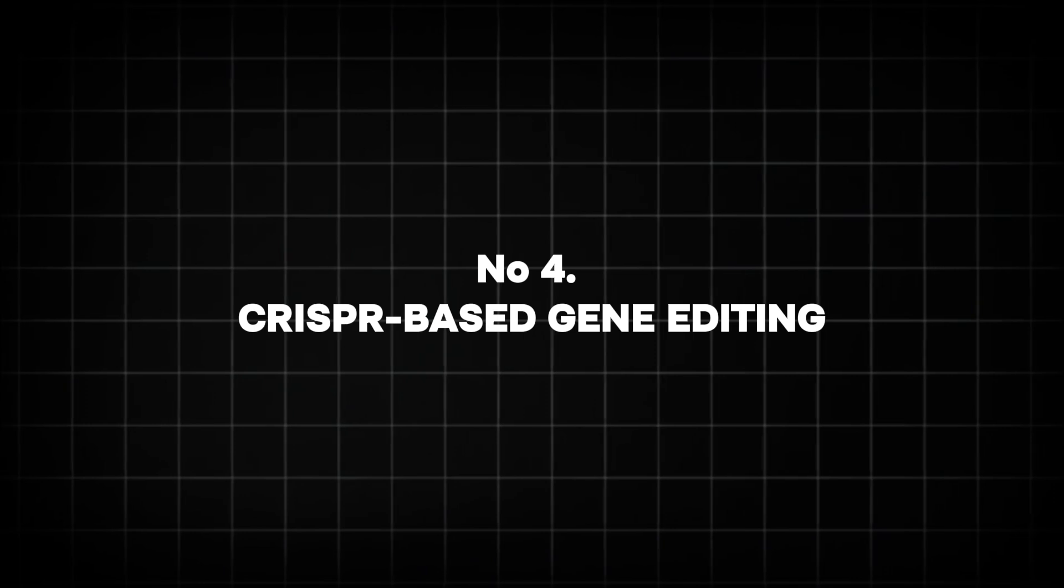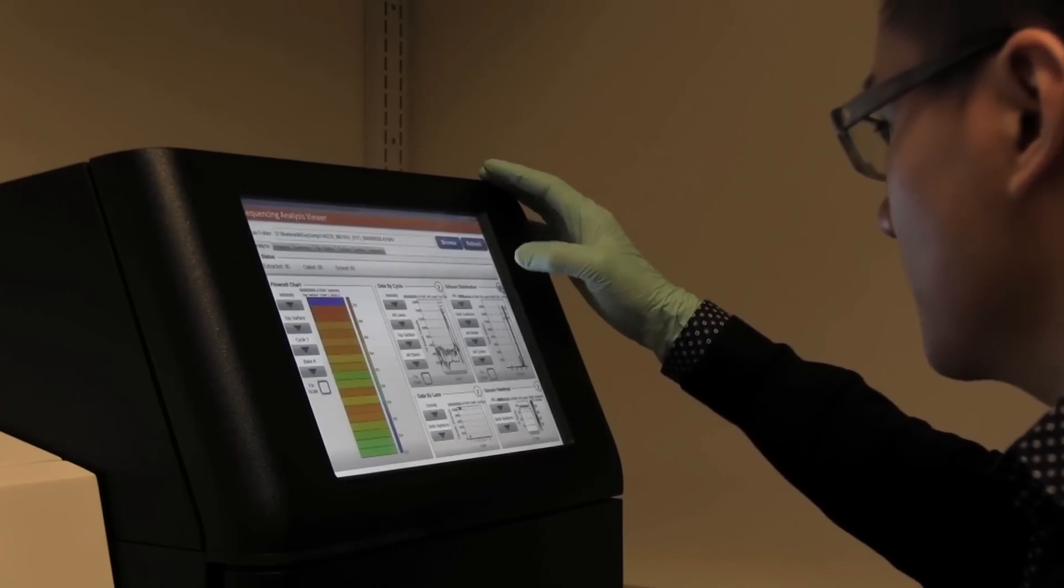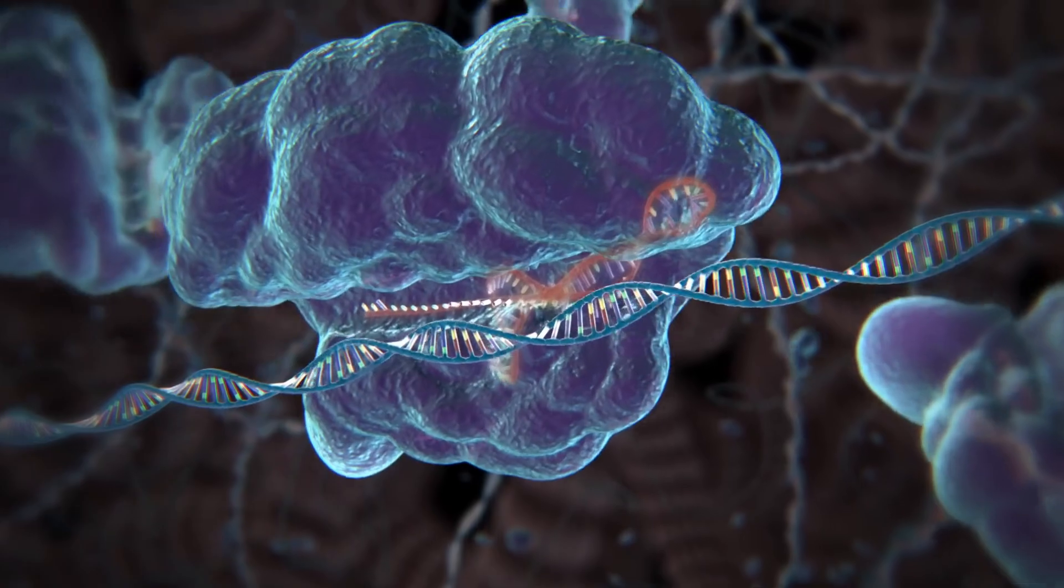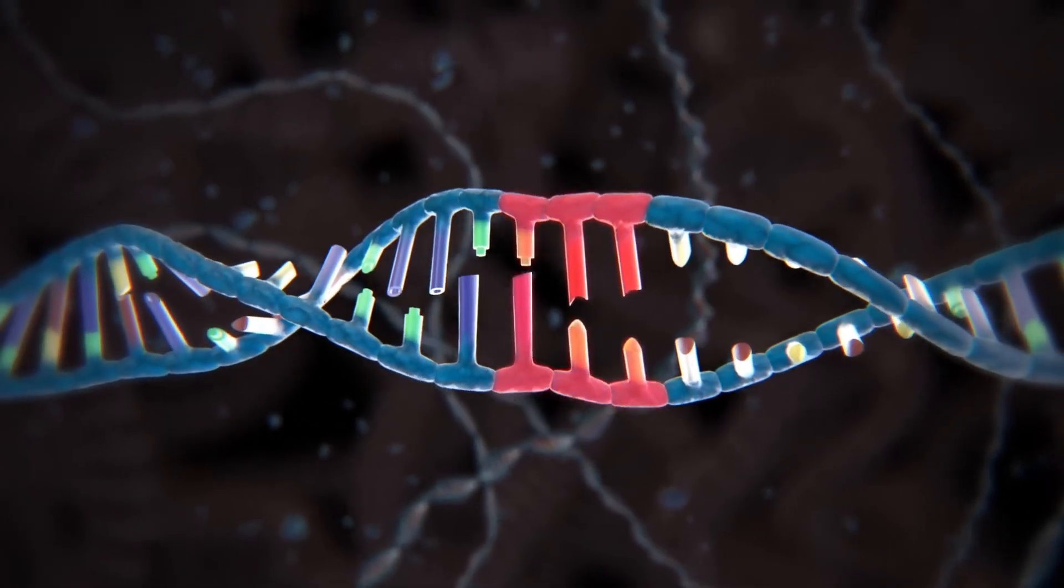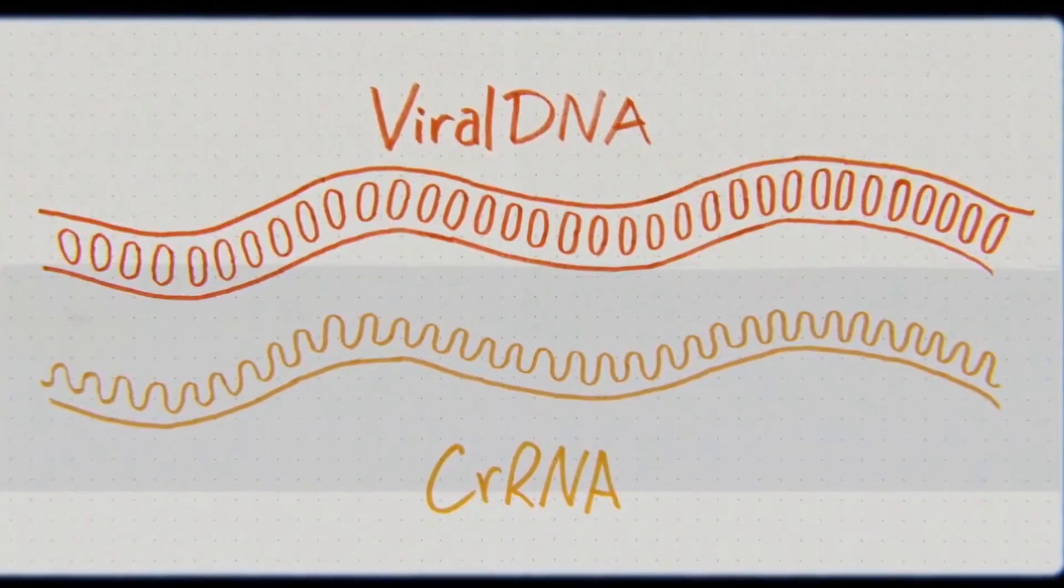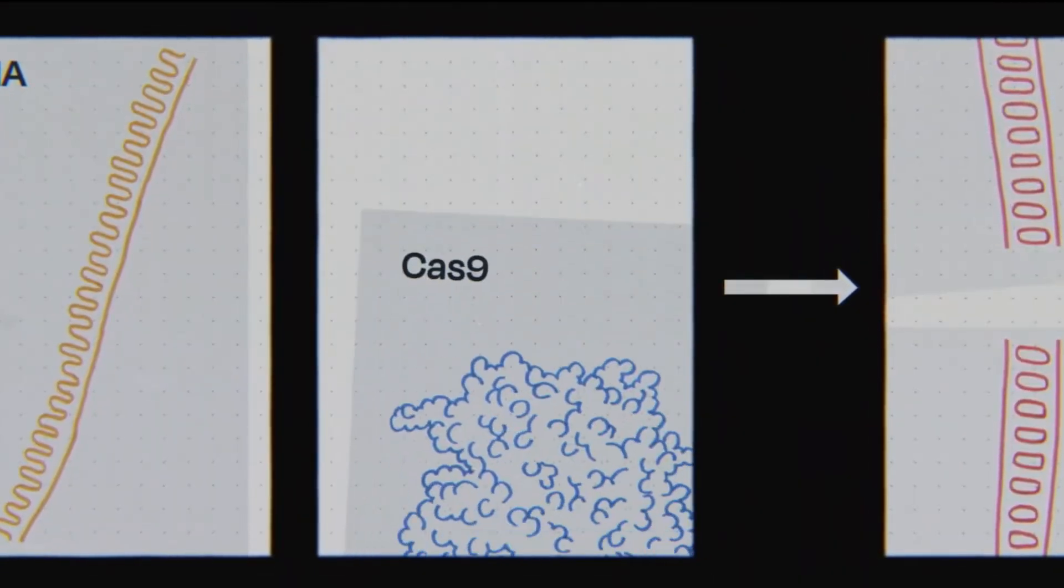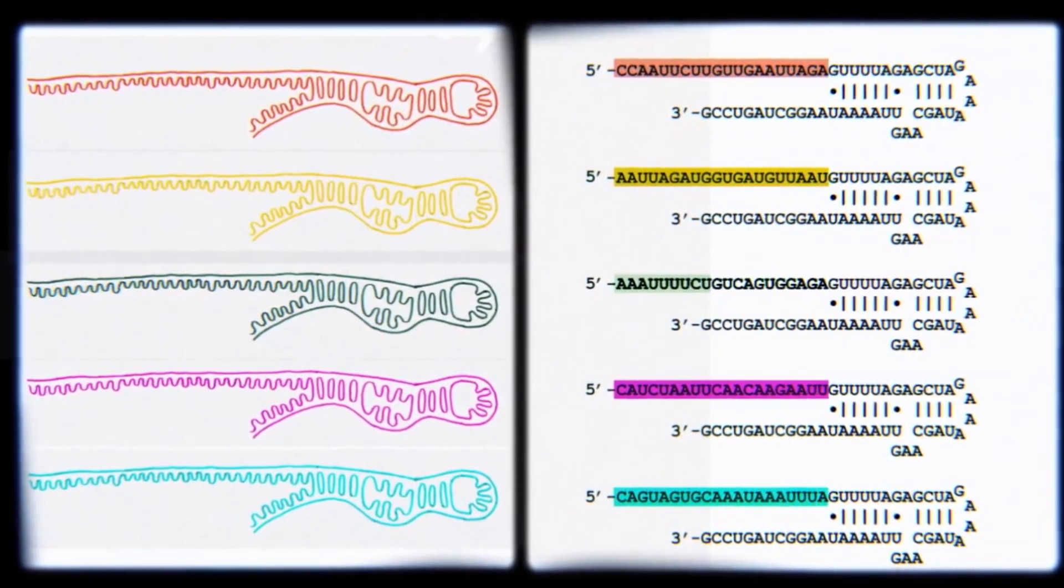Number 4. CRISPR-based gene editing. Now let's talk about something that's literally changing what it means to be human. CRISPR gene editing. This tech is moving out of the lab and into the real world fast. The full name is a mouthful. Clustered, regularly interspaced, short palindromic repeats. But don't worry about that. Just think of it as the world's most precise genetic scissors. It's like having a word processor for DNA where scientists can find, delete, and replace specific genetic sequences. Want to fix a mutation that causes a deadly disease? CRISPR can snip it out and patch in the correct code. It's that precise.